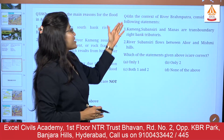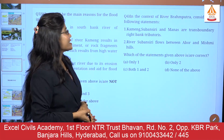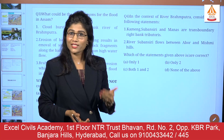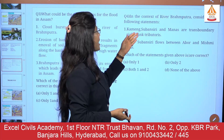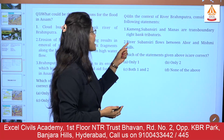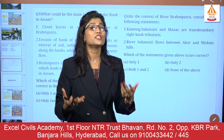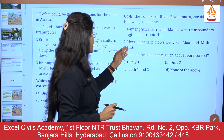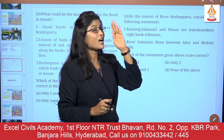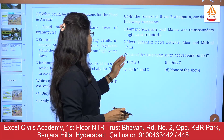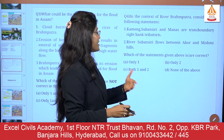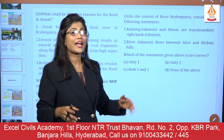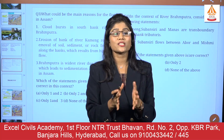Question 4: In the context of river Brahmaputra, consider the following statements. Statement 1: Kameng, Subansiri, and Manas are transboundary right bank tributaries. Statement 2: River Subansiri flows between Abor and Mishmi Hills. Which of the statements given above is/are correct? Options: (A) Only 1, (B) Only 2, (C) Both 1 and 2, (D) None of the above.